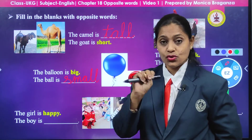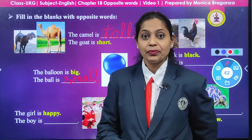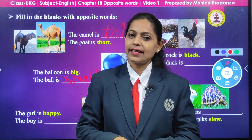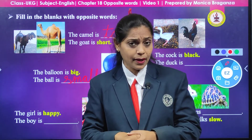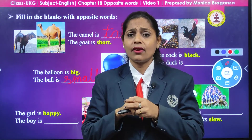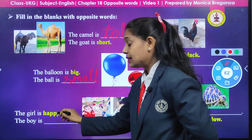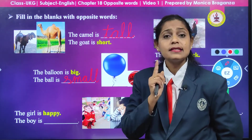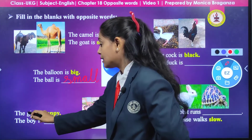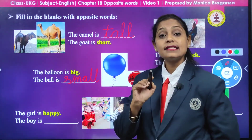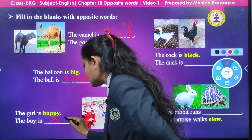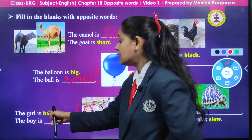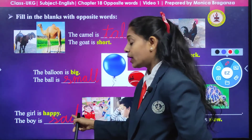Now here we are having a picture of two children. Can you see that girl? She is smiling and laughing — when you are happy you smile and laugh. But when you are not happy you become very sad. So the girl is happy because she is smiling, and can you see the picture of the boy? He is sad. So we are going to write S-A-D, sad. The girl is happy; the boy is sad.